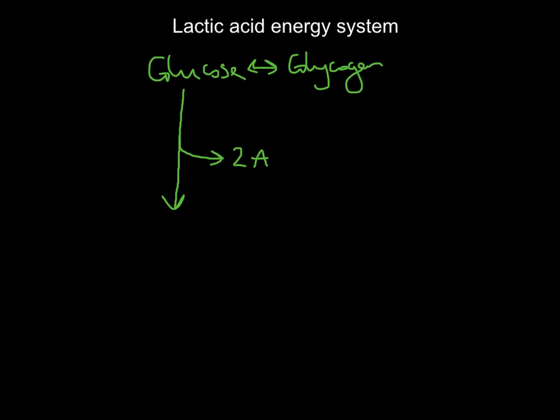The glucose is then broken down and releases enough energy to resynthesize two molecules of ATP. This breaking down of glucose is called glycolysis — that is the breaking down of glucose via glycolysis — and I get energy for two ATP, which is good.